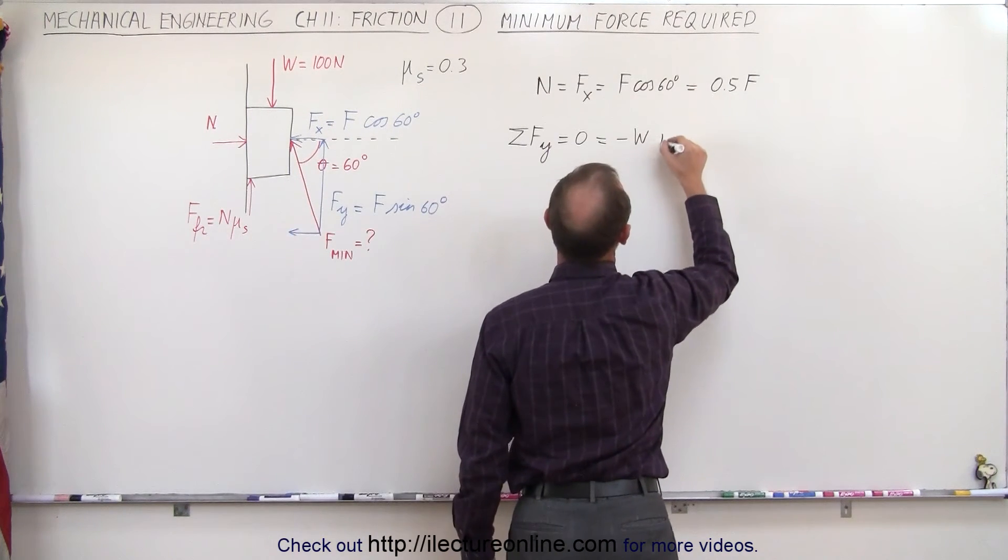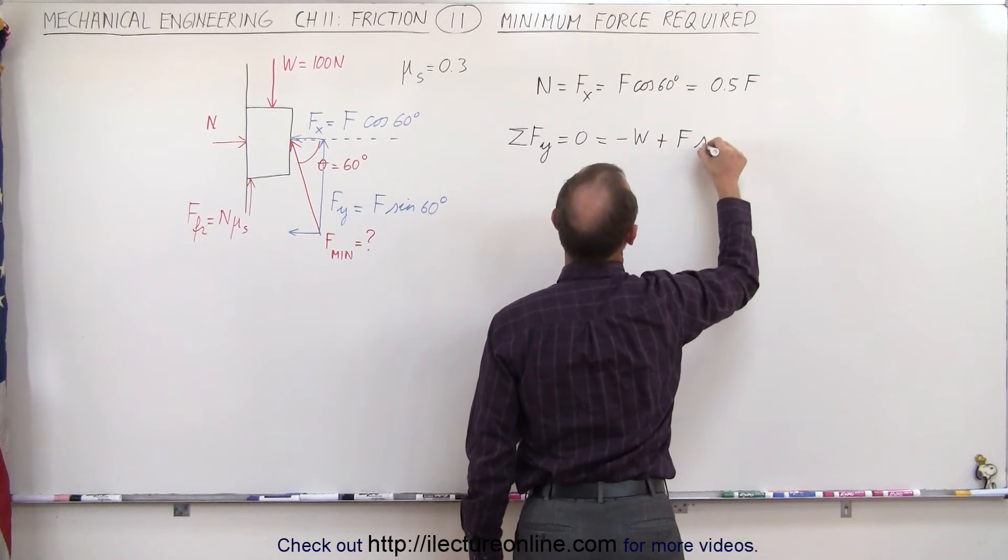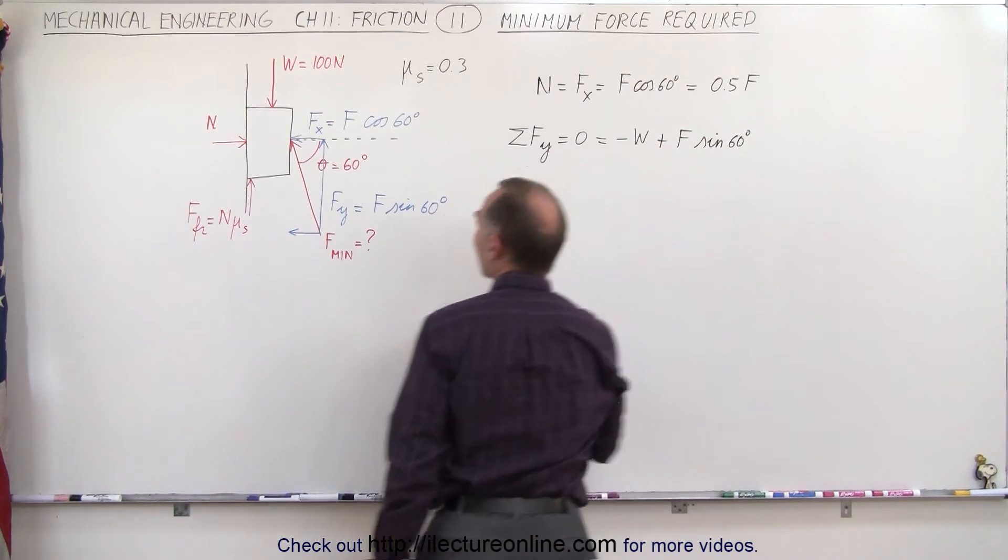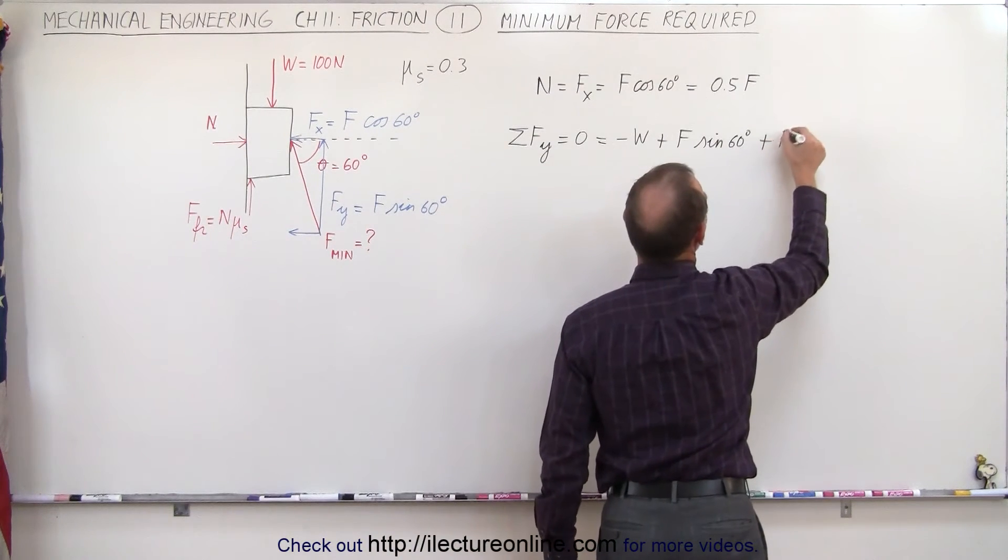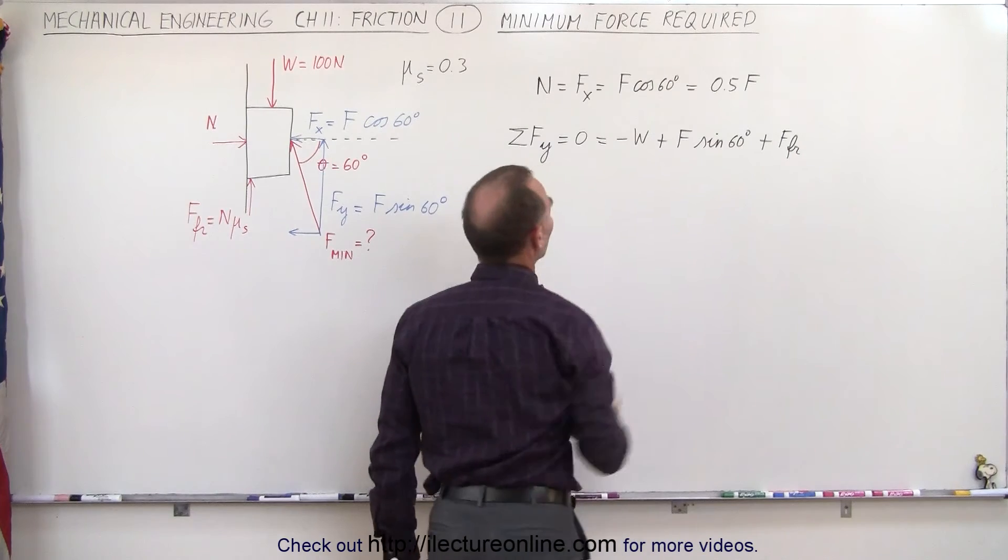...and we have the vertical component F sub y, that would be plus F times the sine of 60 degrees, and then we have the friction force right here, so it would be plus the friction force, and all those together should add up to zero.